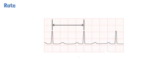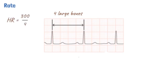These peaks are the R waves, and the distance between them is called the RR interval. By dividing 300 by this number, we can get the heart rate. For example, in the ECG shown, there are 4 large squares between each R wave. Therefore, the heart rate is 300 divided by 4, which gives 75 beats per minute.